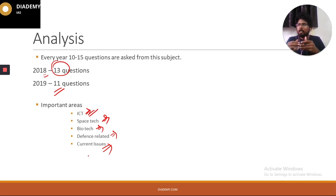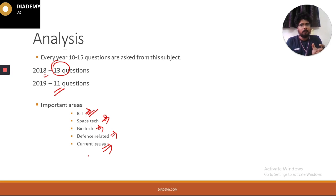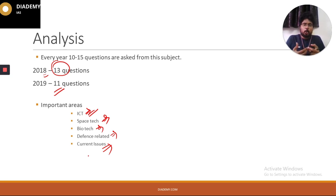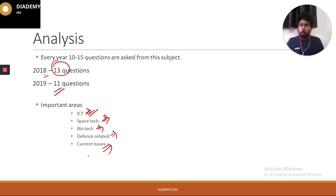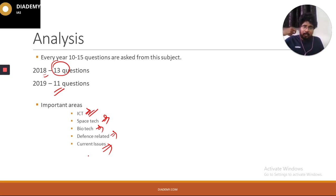The important thing is to know the basic principles. For example, what is the basic principle behind 5G? What is artificial intelligence? You don't need to become an expert, but you must understand the basic concepts — quantum dots, robotics, big data, data sciences. Understanding these basic concepts will help us relate to current affairs and answer well in the examination.